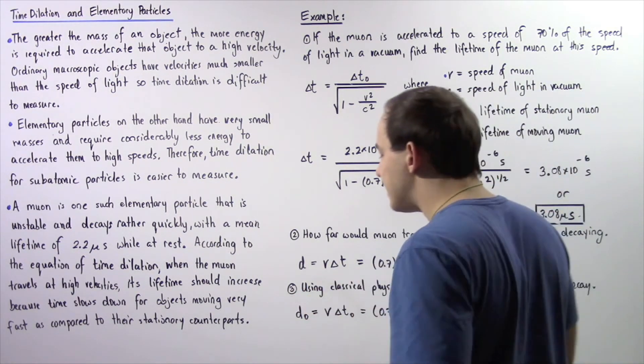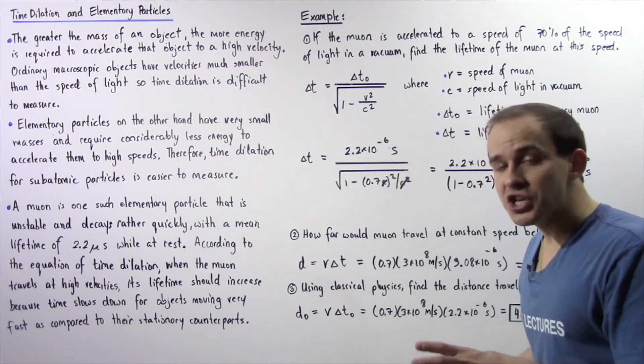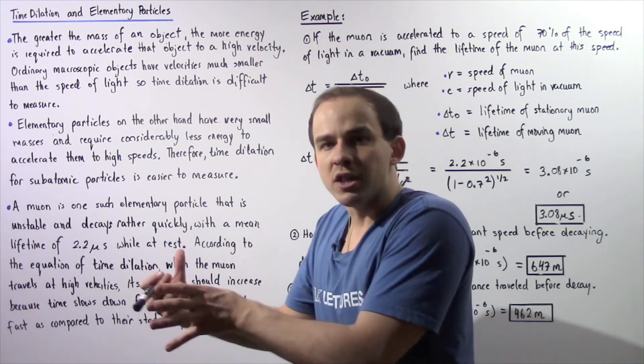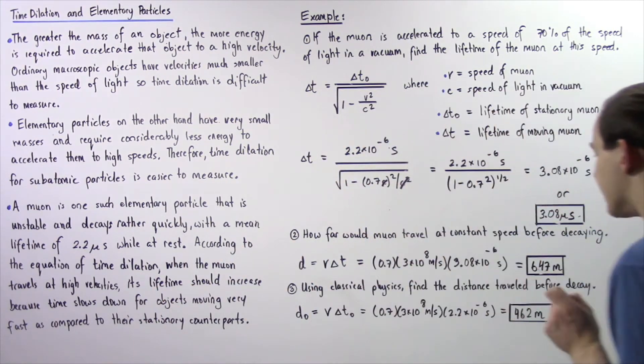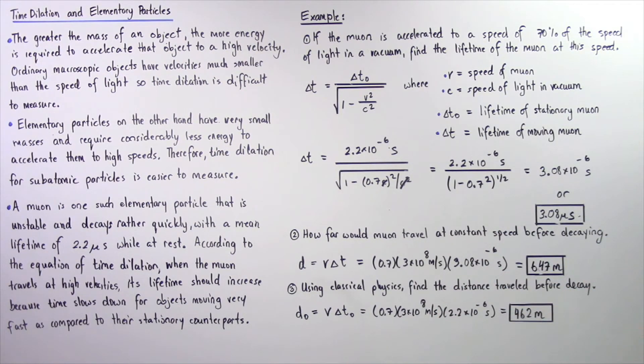So now let's move on to part 3. Using classical physics and not taking into consideration the theory of relativity and time dilation, find the distance traveled before the muon decays.